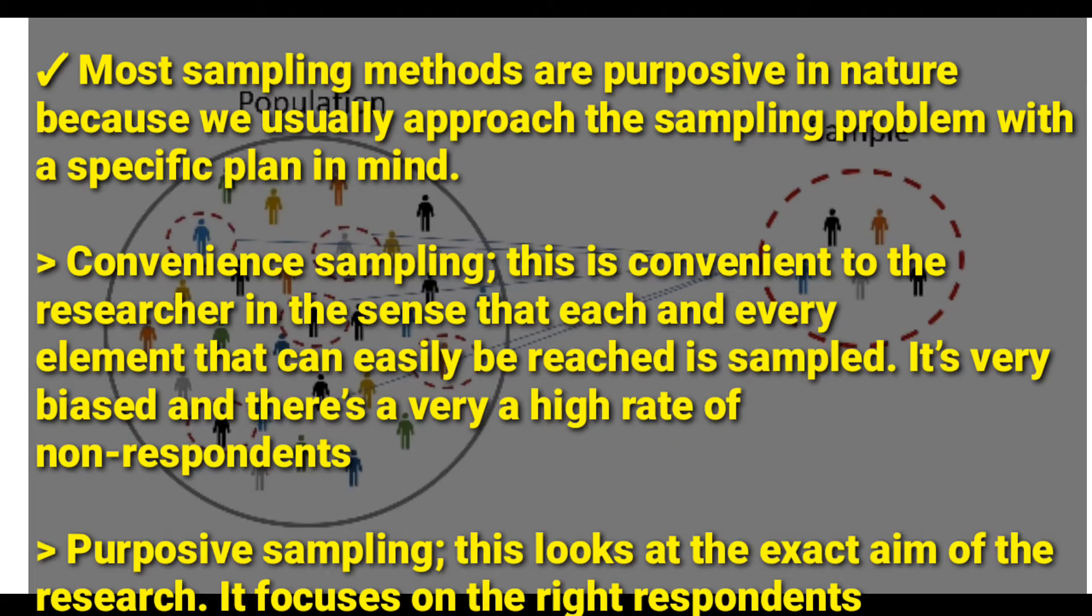You could stand at the gate and every student that you see, you ask them a question. So that is convenience sampling. It's convenient to the researcher in the sense that each and every element that is easily reached is sampled. It is biased and there are very high rates of non-response because not every student that you ask will respond. Some students are arrogant, others don't want to be disturbed.